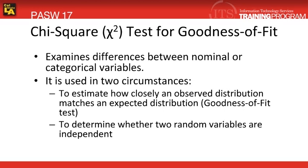Let's go ahead and begin with a brief explanation about the chi-square test for goodness of fit. This particular statistical test is going to be used when you're working with either nominal or ordinal scales of measurement. So, what are these two types of measurements?